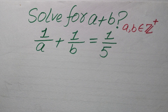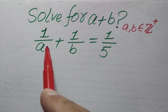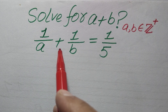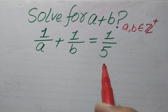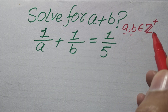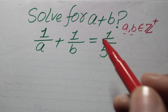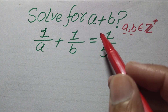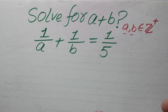Hello everyone. How to solve this problem: find the values of a+b if we have 1/a + 1/b = 1/5, where a and b must belong to positive integers. That means we find the value of a+b only for positive integer values.